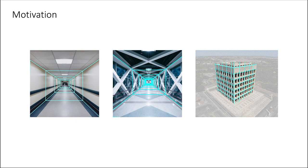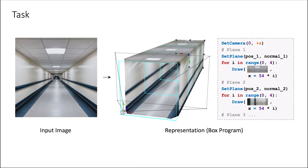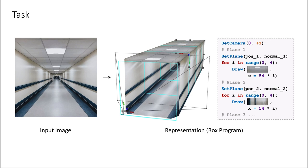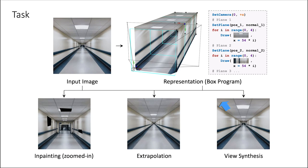Given an input image, our goal is to induce a program-like scene representation that jointly models camera parameters, the 3D position and orientations of the planes, and repeated structure on multi-2D planes, all from a single image. Such a holistic structured scene representation enables 3D-aware image editing operations, including inpainting missing pixels, extrapolating the image contents, and synthesizing new views.